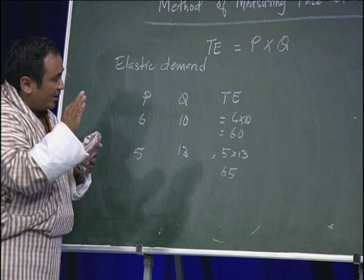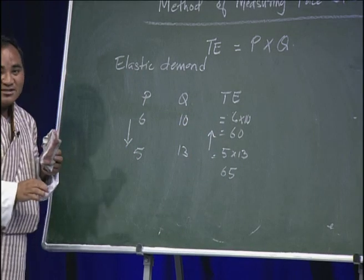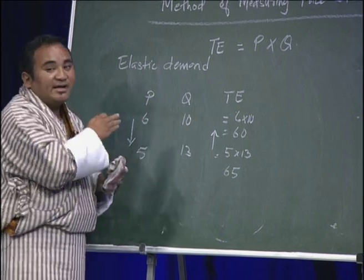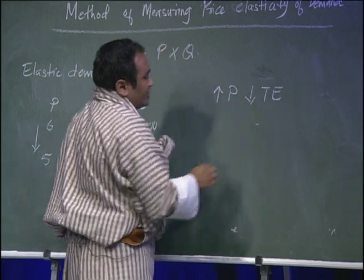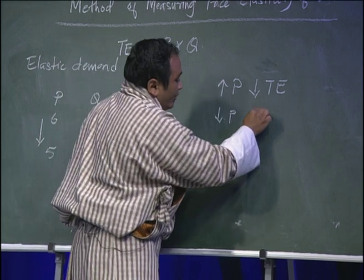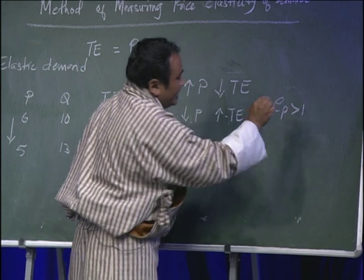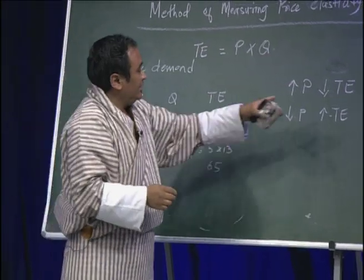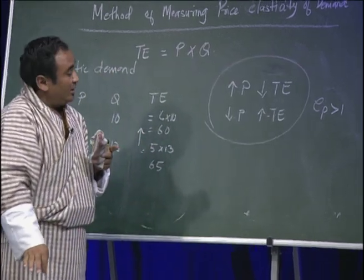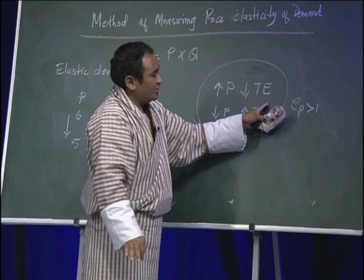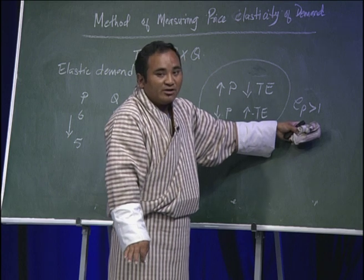The key concept to keep in mind is: when price decreases and total expenditure increases, there is an inverse relationship between price and total expenditure. Decrease in price leads to increase in total expenditure. In such a situation, your price elasticity of demand will be greater than 1, meaning it is elastic demand. The inverse relationship between price and total expenditure, when it exists, means elasticity will be greater than 1.